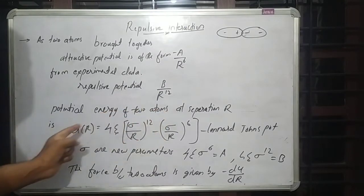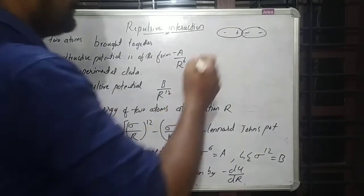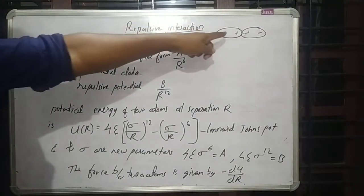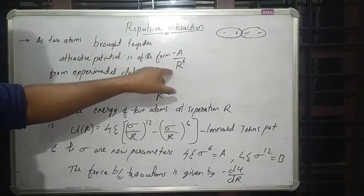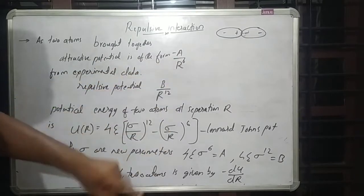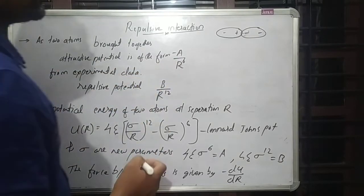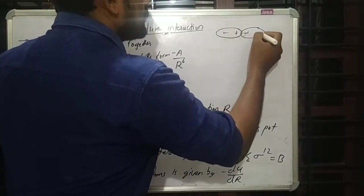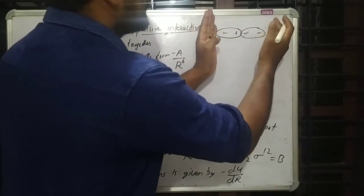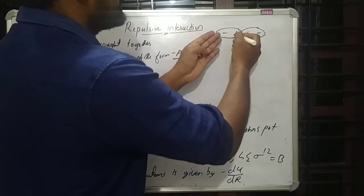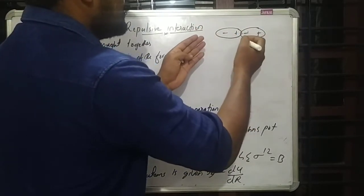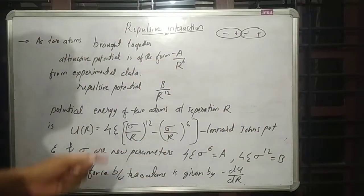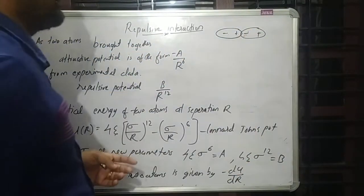The potential energy of two atoms at separation R, when two atoms are brought together, includes both attraction and repulsion. The attraction is in the form of minus A over R raised to 6, and the repulsion arises because if you bring two atoms with negative charges close together, those charges will experience repulsion.